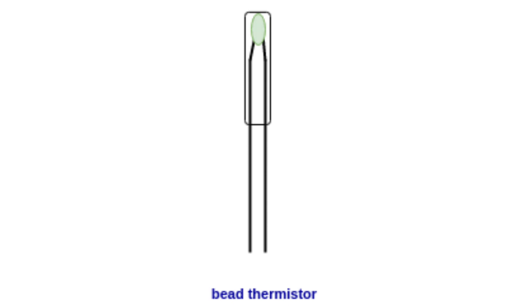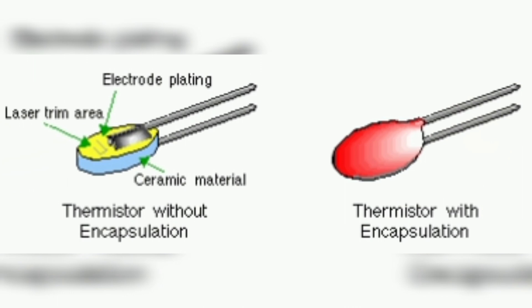Its diameter is as low as 0.15 mm. The measurement element is typically encapsulated in a glass probe. It is commonly used for measuring the temperature of liquids.